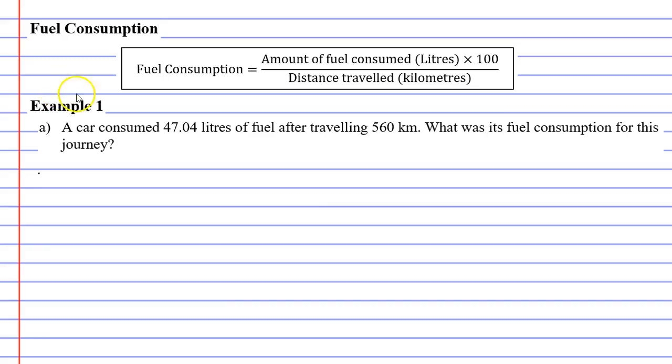So we'll just plug this into the formula. So it says that our fuel consumption can be found by taking the amount of fuel consumed, which in this case is 47.04 litres, multiplying this by 100, so times 100, and then putting it over the distance travelled. So we travelled 560 kilometres.